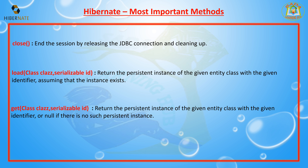The next method is get. The get method returns the persistent instance of a given entity class with the given identifier, or null if there is no such persistent instance. If the identifier is not available in the database, get simply returns null, whereas load throws an exception.